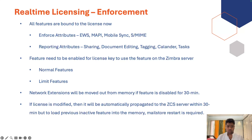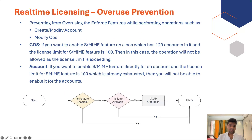There are two kinds of features: normal features and limit features. Normal features are server-level features like backup enable, HSM enable, storage management enable — once enabled, they are available for use. Limit features such as EWS and MAPI need to be enabled with specific limits, and you are allowed to use that feature only up to that limit. Network extensions will be moved out of memory if a feature is disabled for 30 minutes. If a license is modified, it will be automatically propagated to the Zimbra server within 30 minutes, but to load previously inactive features into memory you have to restart mail store.